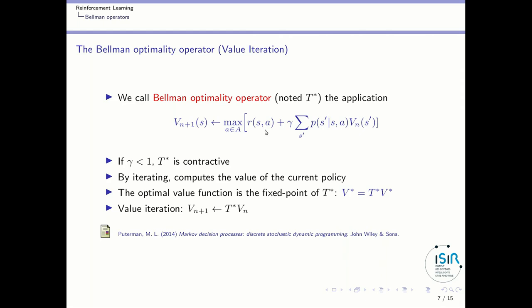We can define an algorithm called value iteration by defining a Bellman optimality operator which takes this formula and then takes the max over actions. So if I compute my next value by taking the max action and computing the value through what is called the Bellman backup — the propagation of value to the next state — we can show that if gamma is less than 1, this operator is contractive. As shown in the Puterman book, the optimal value function is a fixed point of this Bellman optimality operator, so v-star is the fixed point of T-star. By applying T-star repeatedly to an initial value function, you will converge to the optimal value function.